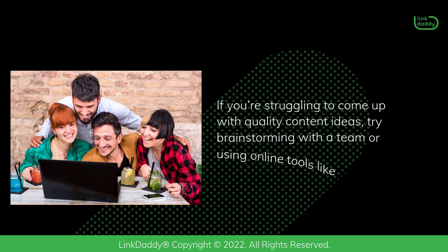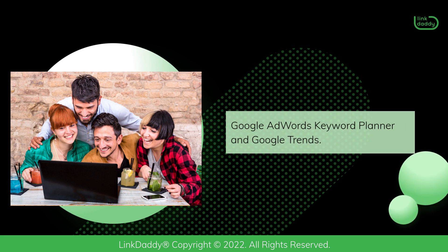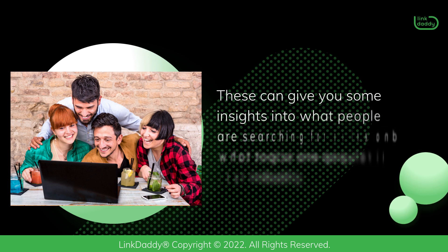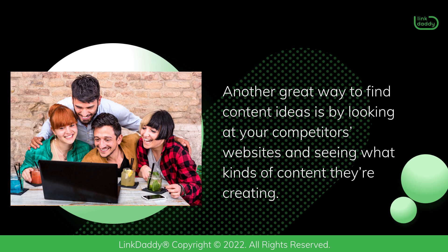If you're struggling to come up with quality content ideas, try brainstorming with a team or using online tools like Google AdWords Keyword Planner and Google Trends. These can give you some insights into what people are searching for online and what topics are popular in your industry. Another great way to find content ideas is by looking at your competitors' websites and seeing what kinds of content they're creating.